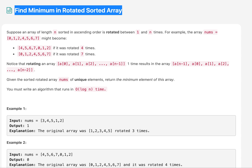Hello everyone, welcome to day 31 of the August coding challenge — today is the last day. The question is: Find Minimum in Rotated Sorted Array. A rotated sorted array is an array which is sorted in nature but also rotated about a particular point. We need to find the minimum element in that rotated sorted array.